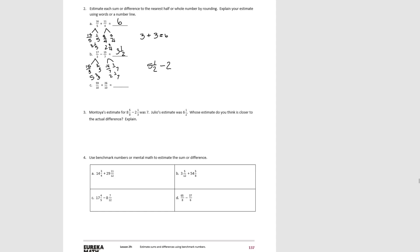Try C. Turning these into mixed numbers: 50 tenths plus 9 tenths gives 5 and 9 tenths. And 20 tenths and 6 tenths gives 2 and 6 tenths. So 5 and 9 tenths is very close to 6. And 2 and 6 tenths — since 5 tenths would be half — is close to 2 and 1 half. Adding these gives an estimate of 8 and 1 half.